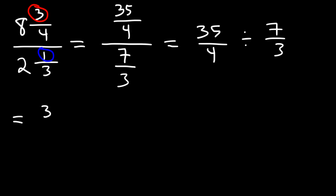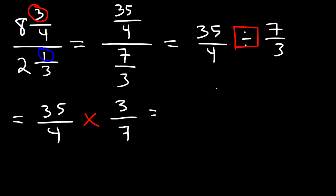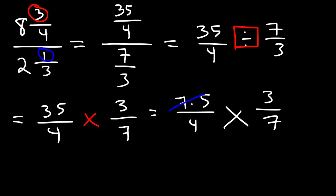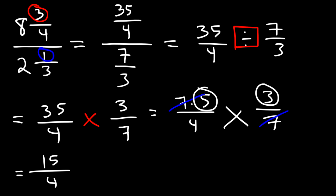Using keep-change-flip, we keep the first fraction the same, change division to multiplication, and flip the second fraction. 35 can be written as 7 times 5, and notice that we can cancel a 7, so we're left with 5 times 3 which is 15, divided by 4.